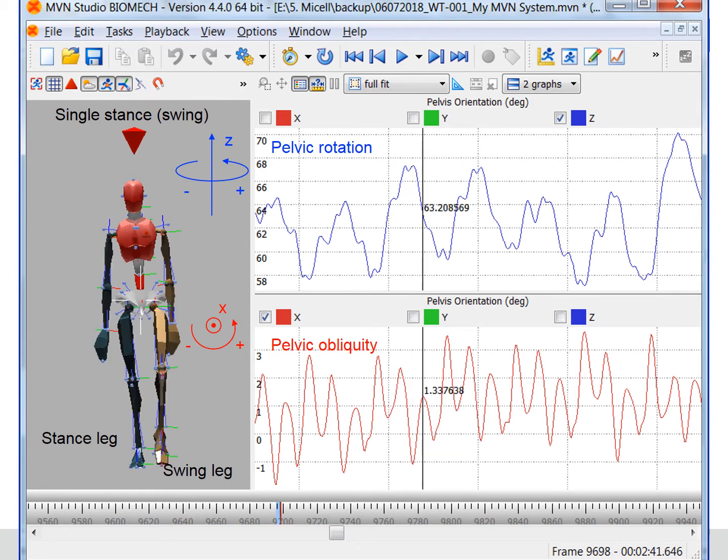This is the mid-swing phase of the left leg. The pelvic rotation is in the middle of the peak, which means the pelvic rotation is smaller. Even if the value is around 63 degrees, there is an offset because the angle is based on the global coordinate system.